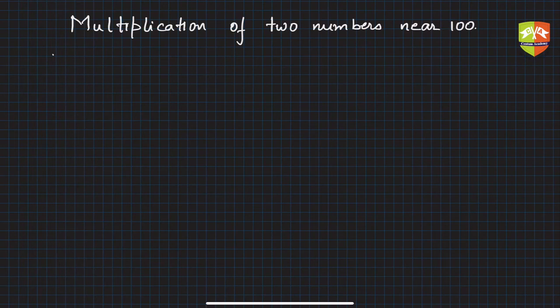Let's take the first example. It is very similar to what we discussed in the previous video. Let's say we have to multiply 103 to 107. These are the two numbers, both of them are greater than 100 but close to 100 as well.